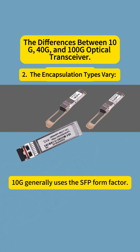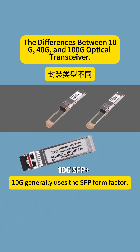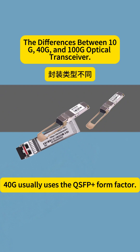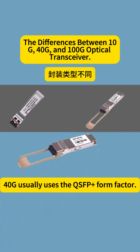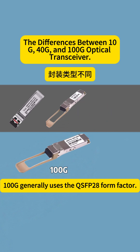2. The packaging types vary. 10G generally uses the SFP form factor. 40G usually uses the QSFP+ form factor. 100G generally uses the QSFP28 form factor.